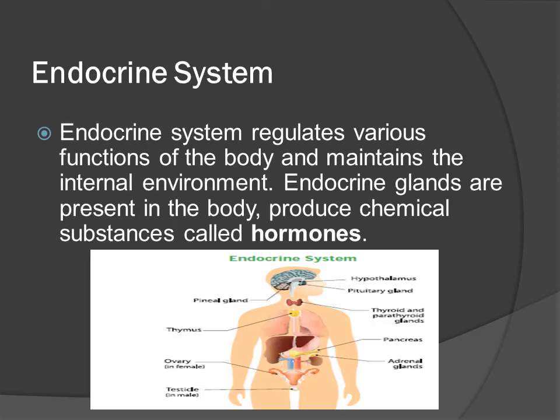The endocrine system regulates various functions of the body and maintains the internal environment. Endocrine glands present in the body produce chemical substances called hormones. The endocrine glands include the pineal gland, thymus, ovaries (in females), testes (in males), hypothalamus, pituitary gland, thyroid and parathyroid glands, pancreas and adrenal glands.